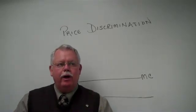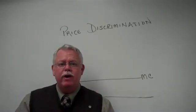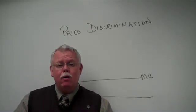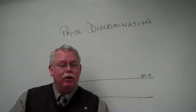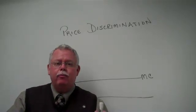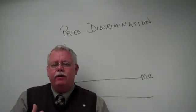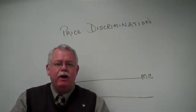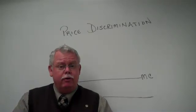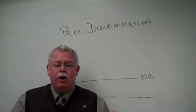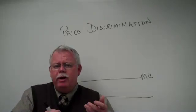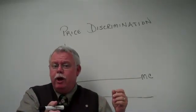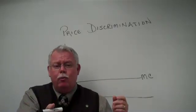Let's take a very quick look at something called price discrimination. This is a technique that sellers use when they have some market power, particularly monopolies. They're able to set prices, but in order to maximize their profit, they know that some customers have a different elasticity of demand than others — some customers are willing to pay more for a product than others. So they'd like to charge that one segment a higher price, but still keep the other customers satisfied with perhaps a lower price.